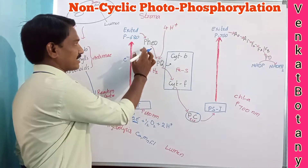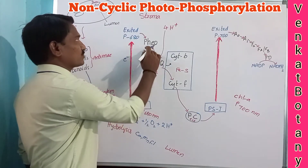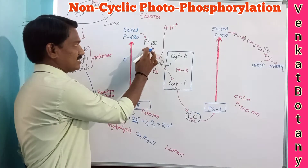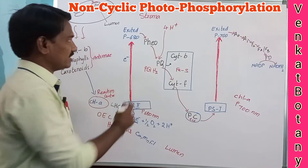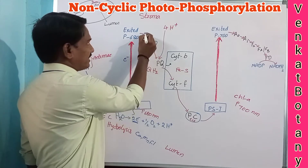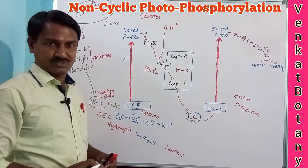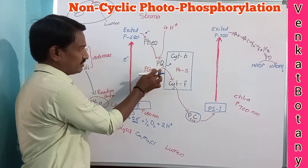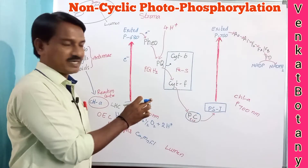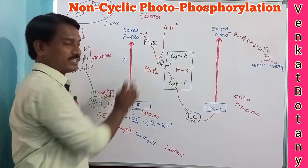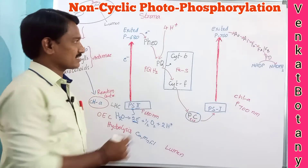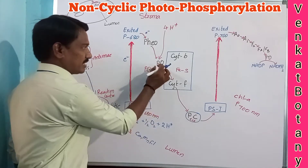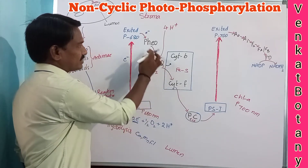Pheophytin is present on the thylakoid membrane towards the stroma side. By taking electrons, pheophytin is reduced. The electrons are then transferred from pheophytin to the Q cycle (plastoquinone, PQ), and pheophytin is oxidized.